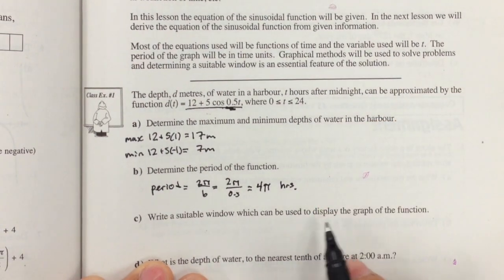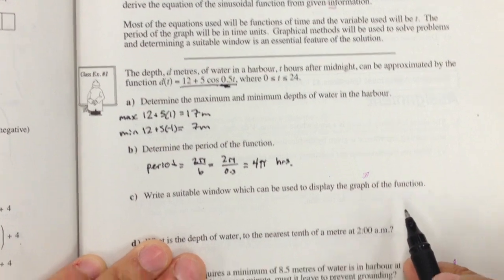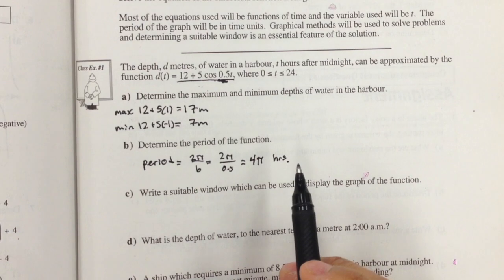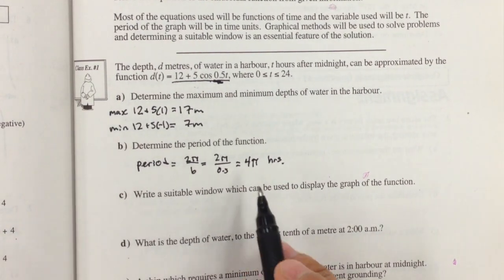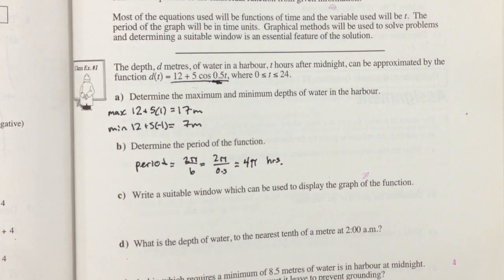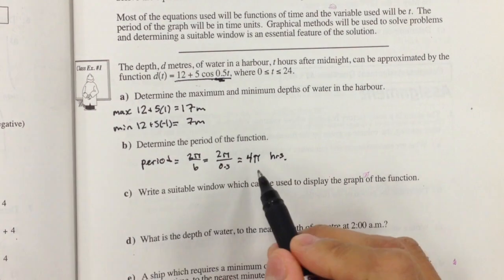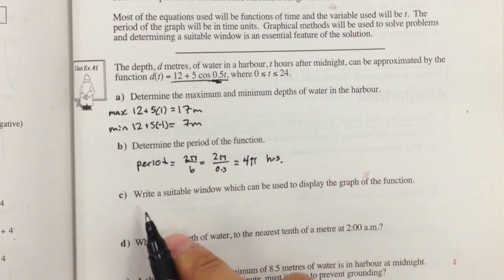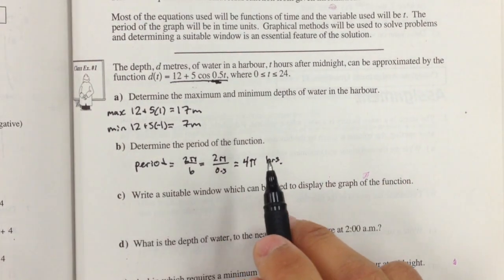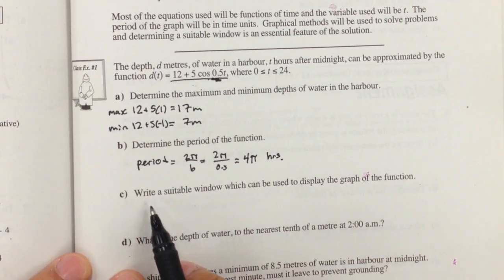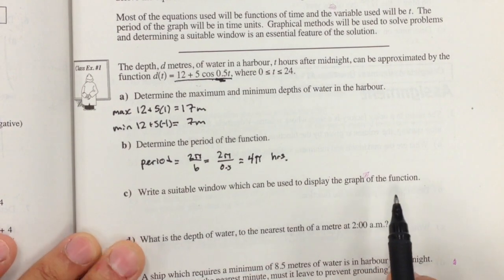Write a suitable window which can be used to display the graph of the function. This is cool, right? If you think about how tides work, generally speaking, you have a high tide and another high tide every approximately 12 hours, but it's actually a little bit more, right? 4 times π, and that's why you don't have the exact same high tides and low tides every single day.